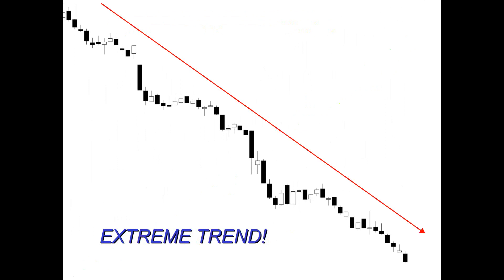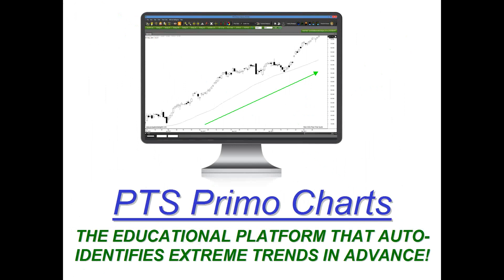What if there was a platform or a tool where everything was simple? You could simply click on a tab or an icon and it would automatically identify these extreme trends in advance — prior to the big move, either to the upside or to the downside — so you could get ready to establish some type of trade, some type of entry into this extreme trend before it was even starting to take place. Well, there actually is. It's our PTS Primo Charting platform — the educational platform that auto-identifies extreme trends in advance. I'm going to share with you a lot of current examples using our platform to identify these scenarios today.